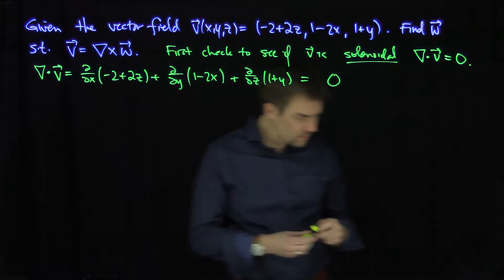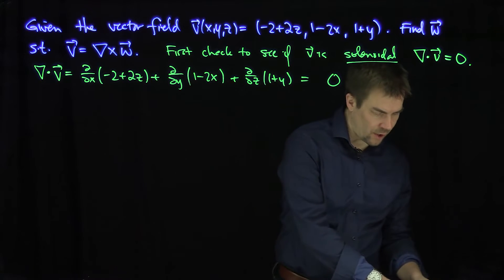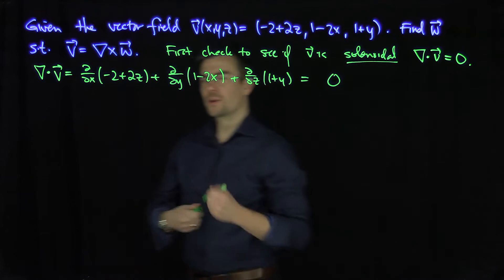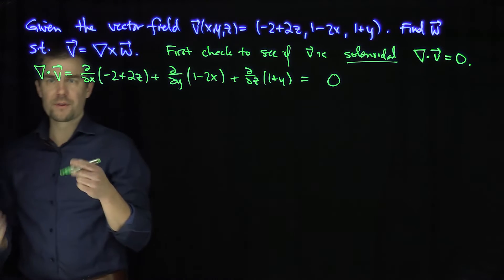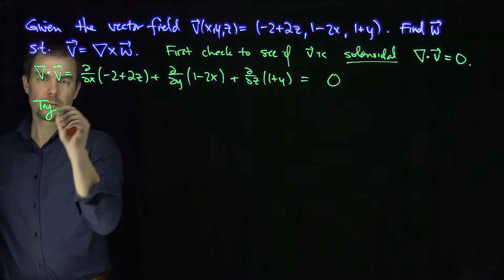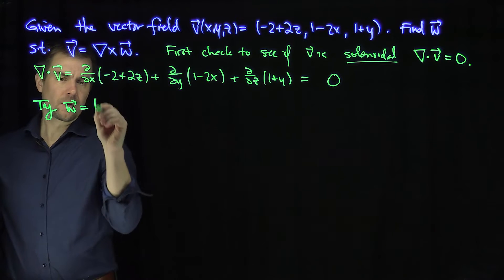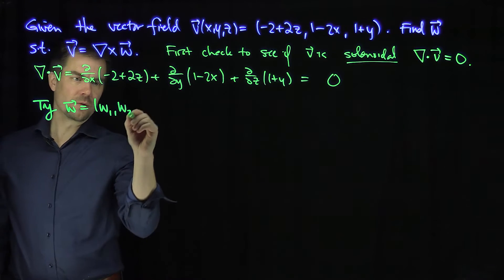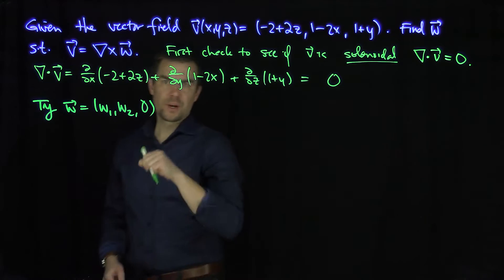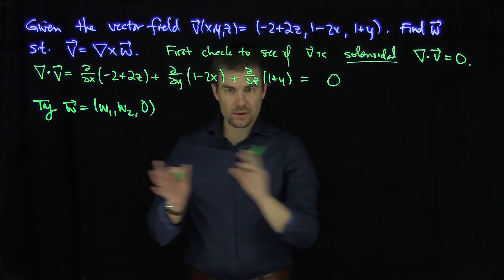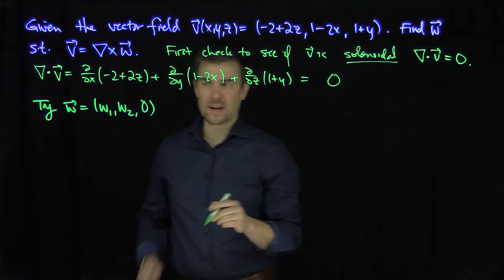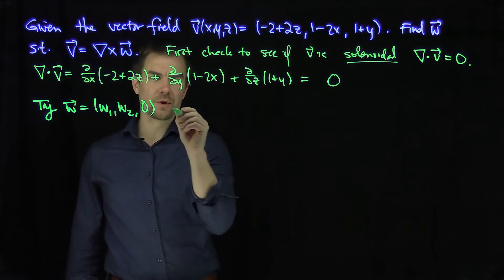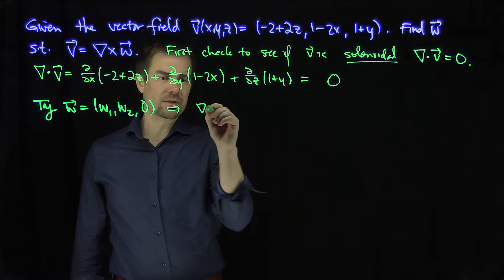Now what we can do is we know that these w's are unique up to a gradient, so we're going to assume a special form of this w. We're going to try w to be w1, w2, and 0. And the reason I put a 0 there is because I can construct a gradient vector field which eliminates that last component. And so if we do this, then what is the curl of this vector field w?